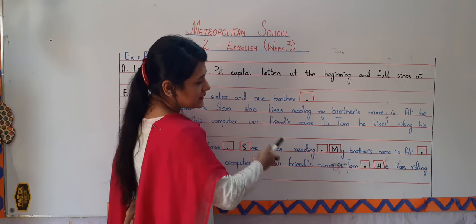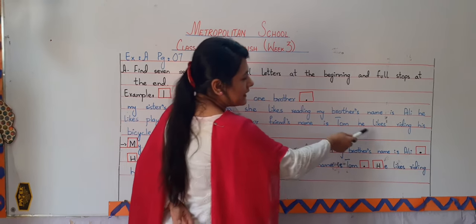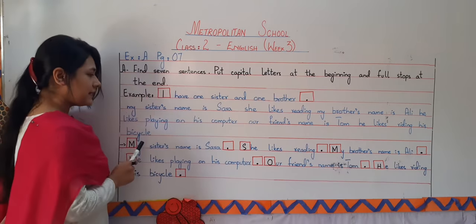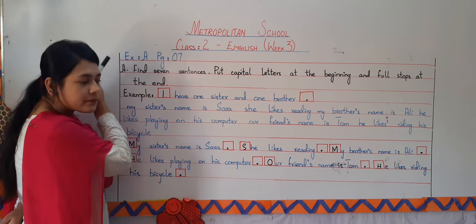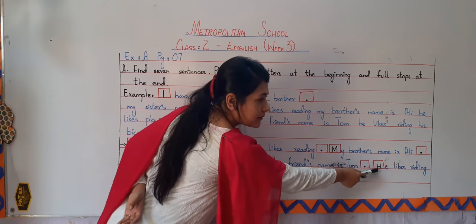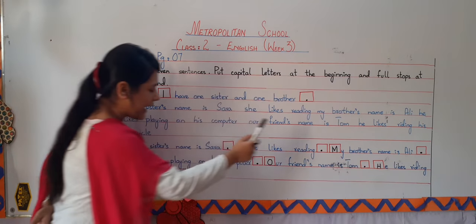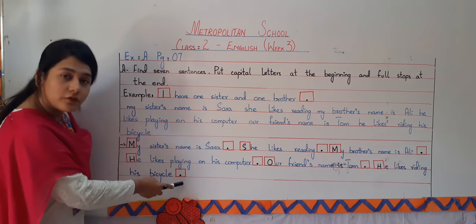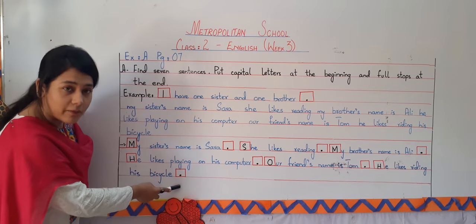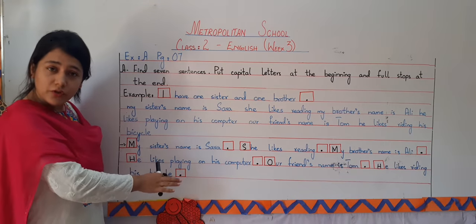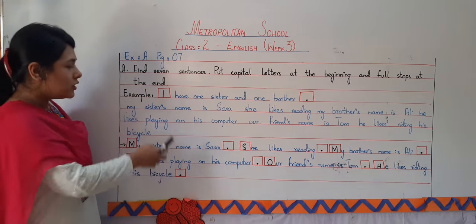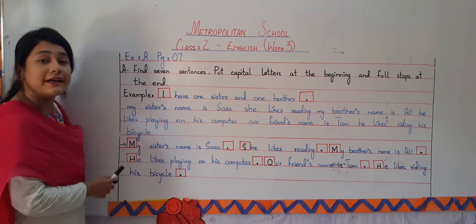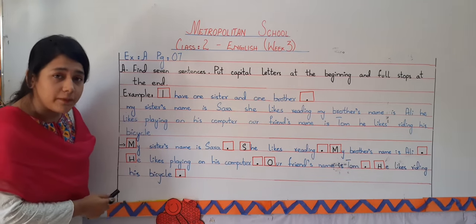And the last sentence is 'He likes riding his bicycle.' So H will be in capital form and by the end we have put a full stop. I guess you all have understood what you have to do — just do it like this in your grammar copy.